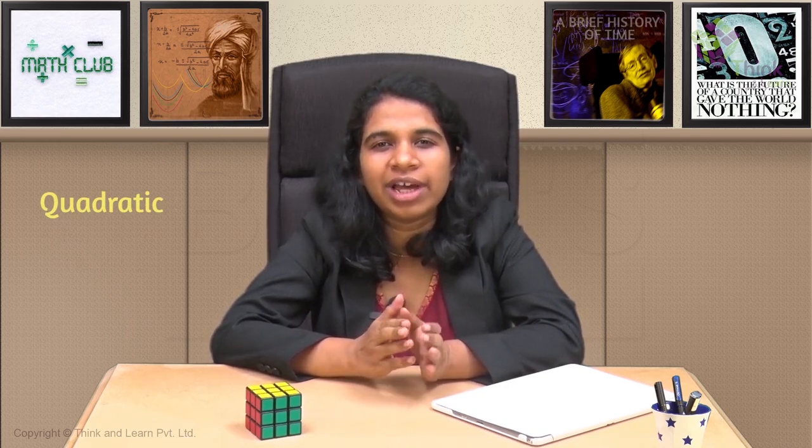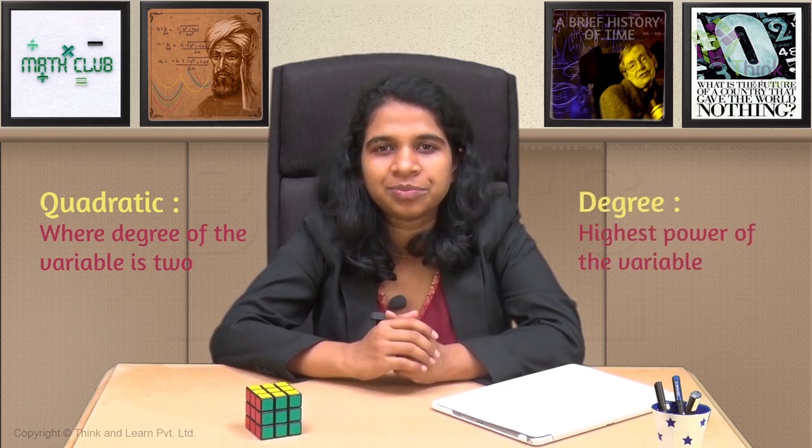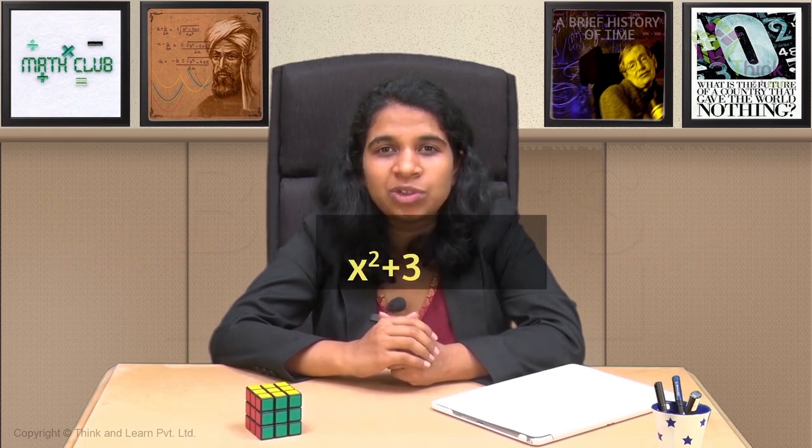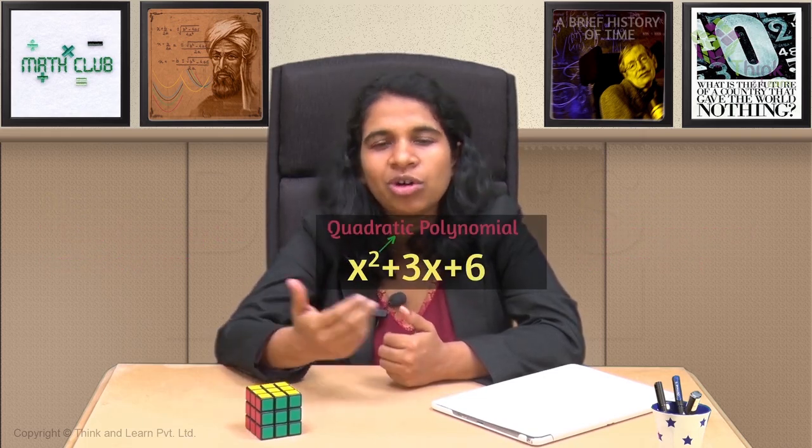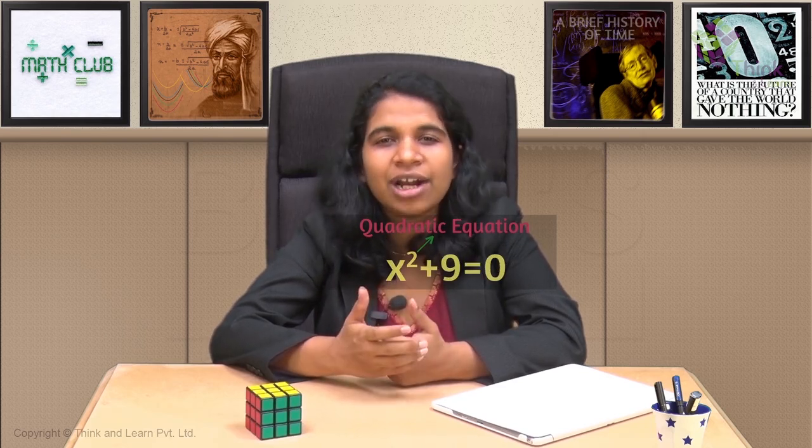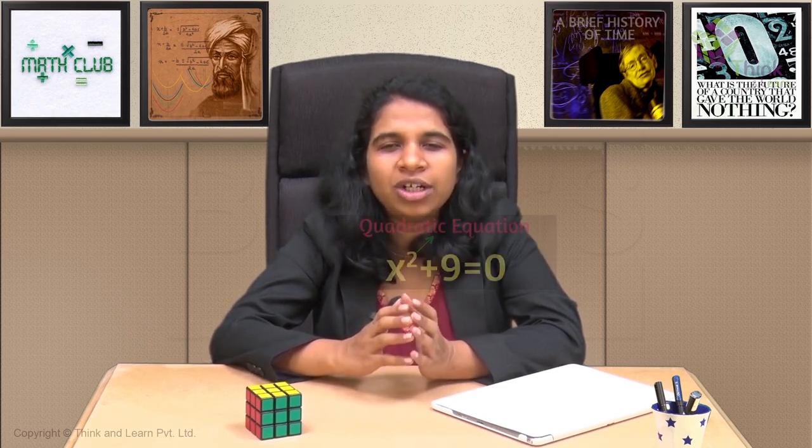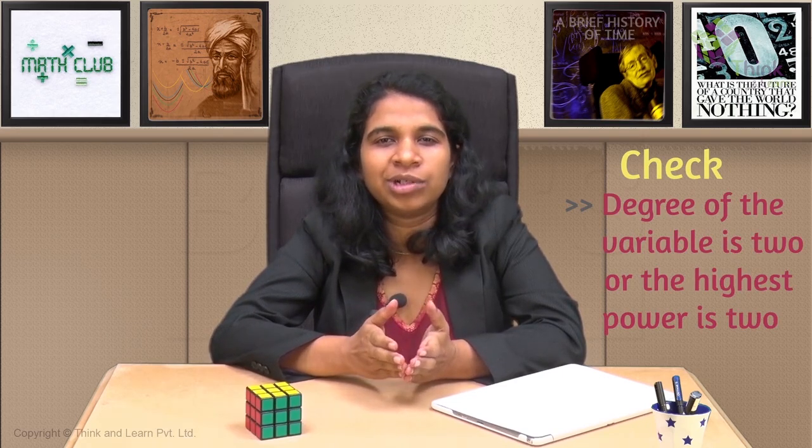Let's start with quadratics. So what is a quadratic? Very simple. A quadratic is nothing but an expression where the degree of the variable is 2. Degree, as we know, is nothing but the highest power of the variable. So if I have, say, x squared plus 3x plus 6, that would be a quadratic polynomial. If I put equal to 0, it becomes a quadratic equation. Or x squared equal to 5, again a quadratic. x squared plus 9 equal to 0, again a quadratic. So all you need to do is check whether the degree of the variable is 2, or the highest power of the variable is 2.